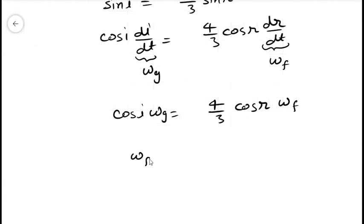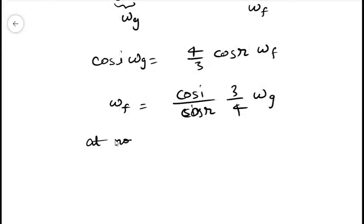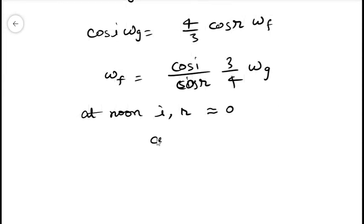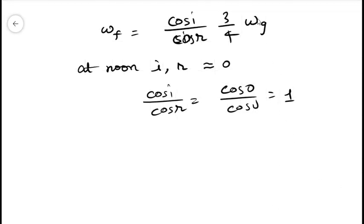So omega f will be equals to cosine i over cosine r times 3 by 4 omega g. At noon, i and r equals to 0. So cosine i over cosine r will be cosine zero over cosine zero, that is one.